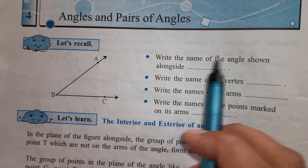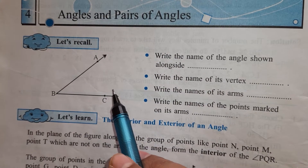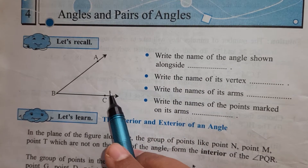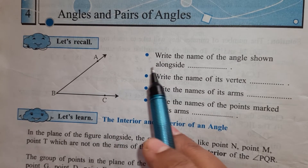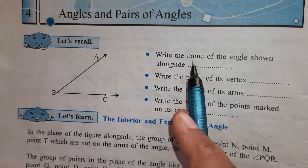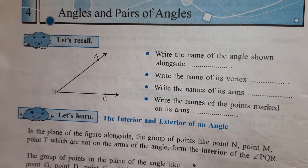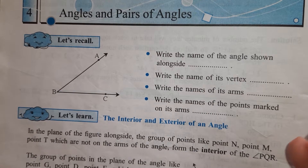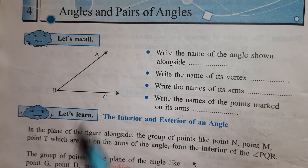Now write the name of the angle shown alongside. Many times students get confused while writing the name — they write 'acute angle'. This is an acute angle, it is true, but they have asked us the name of the angle and not the type of the angle. Name is different and type is different.